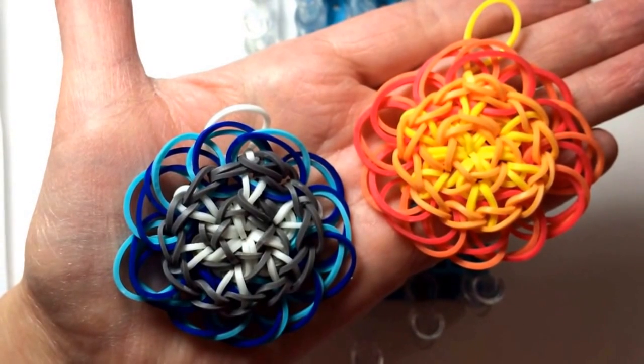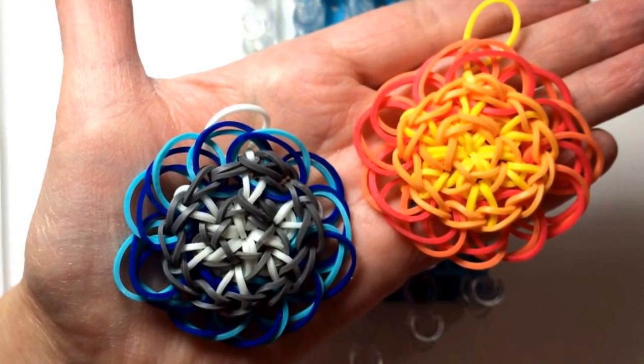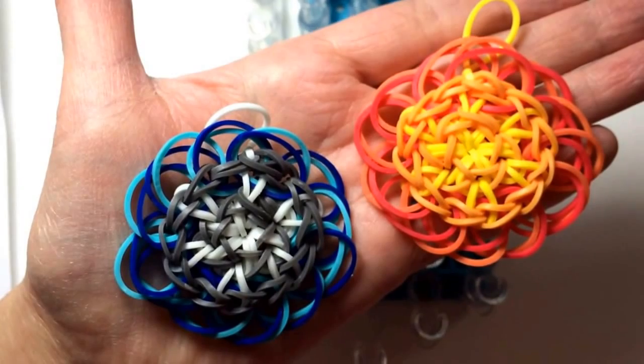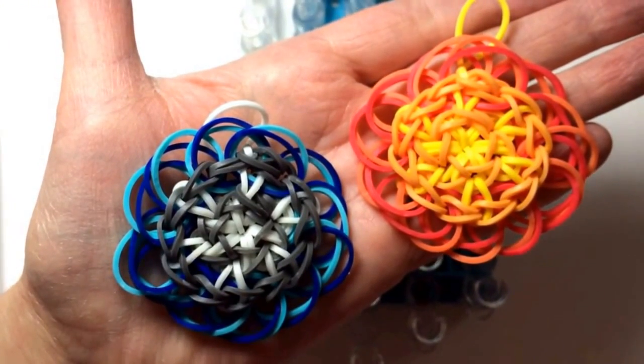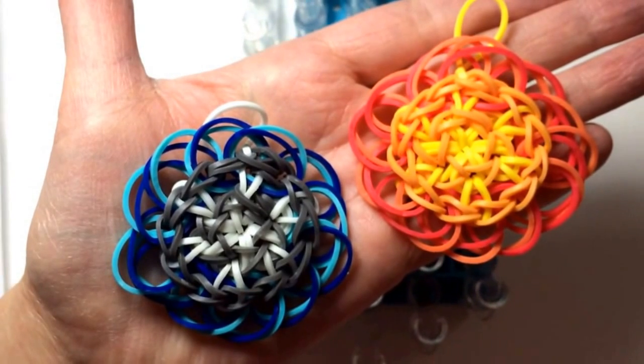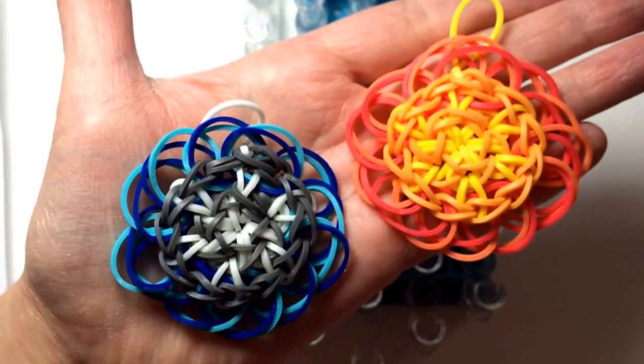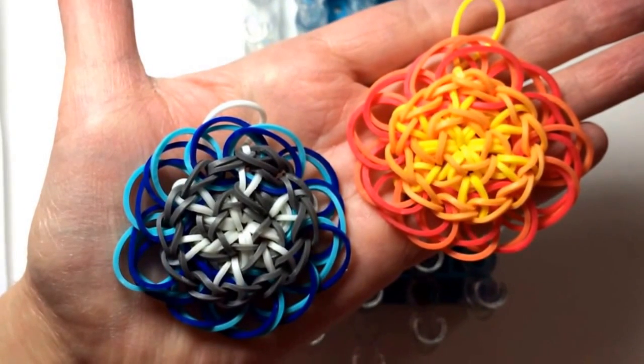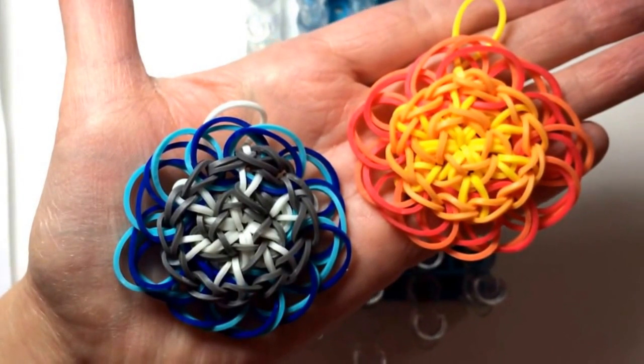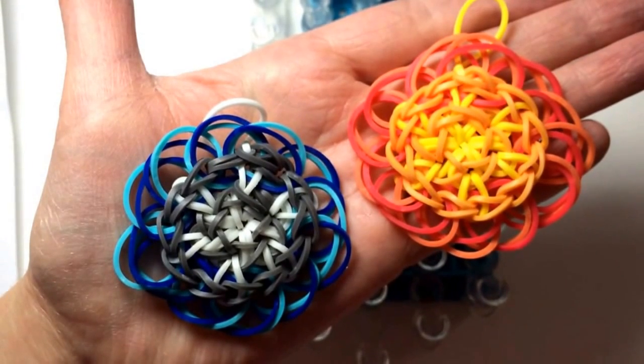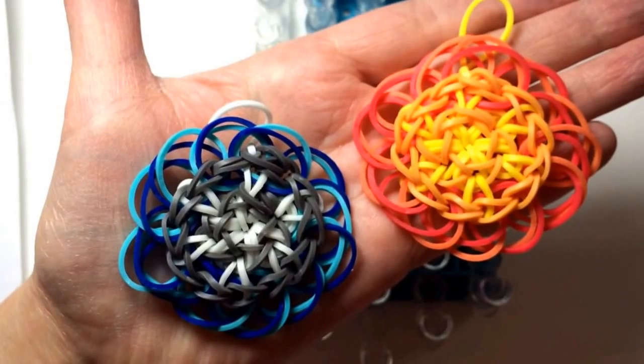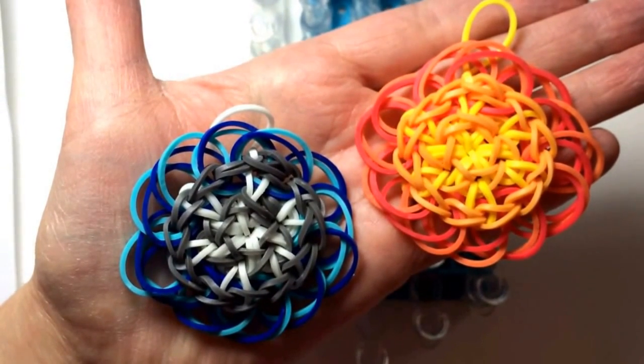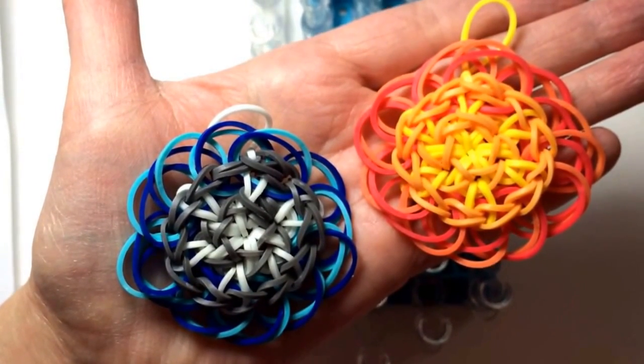To make the Crazy Daisy you need two looms. You also need, the first time you do this, four colors of rubber bands. You can make this ultimately with just a single color or two colors or whatever combination of colors you want, but it will be much more confusing. If you use four colors you'll have an easier time following these instructions. So learn them once with four colors and then go crazy getting creative with other color combinations.